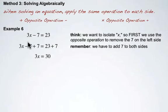And we end up with 3x equal to 30. These 7's cancel out, and we have 23 plus 7 to give us 30.